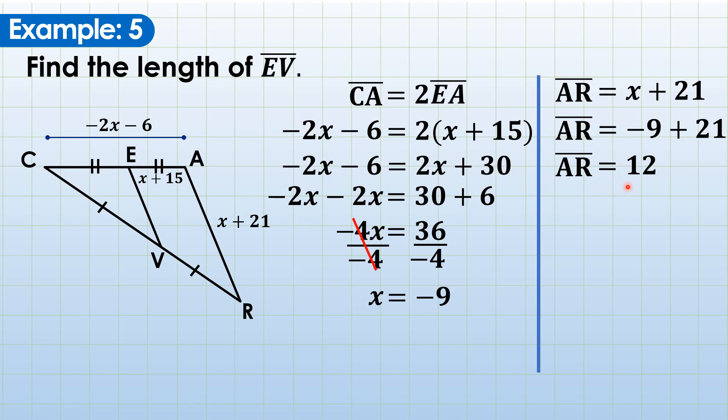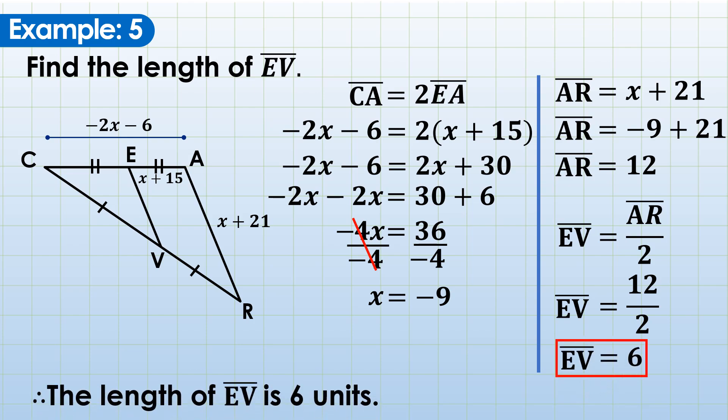We're just going to take the one half of it to determine the value of EV. So EV is one half of AR. Substitute, EV is 12 divided by 2. EV is 6. So that's it. Our conclusion, the length of EV is 6 units.